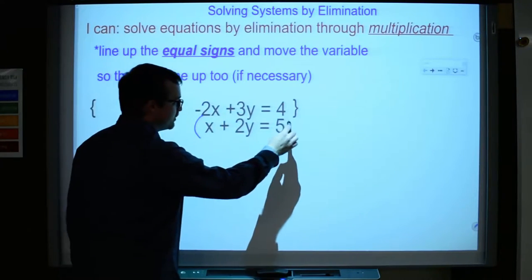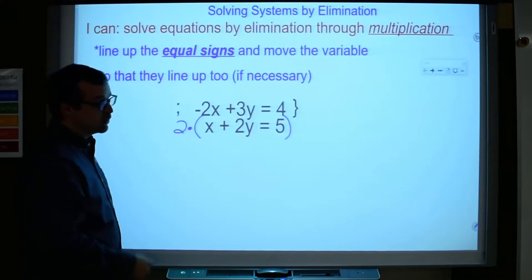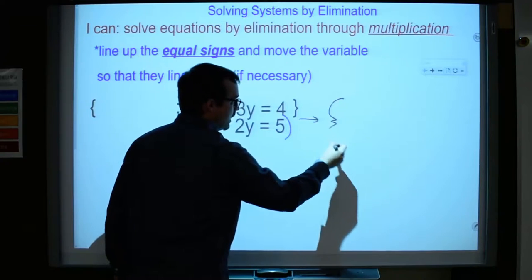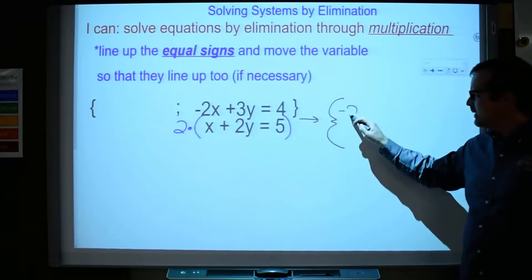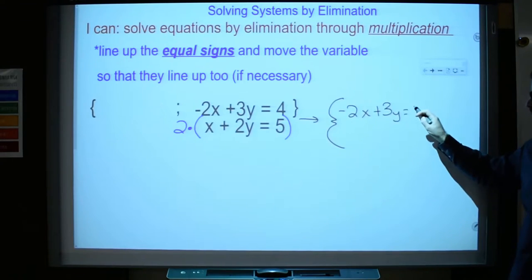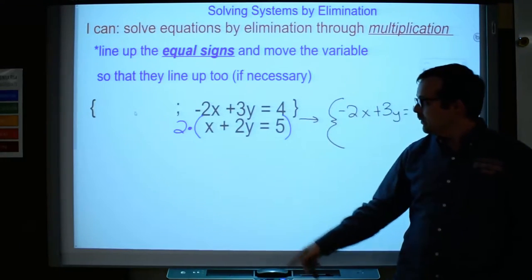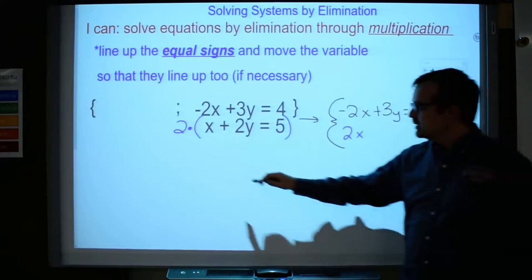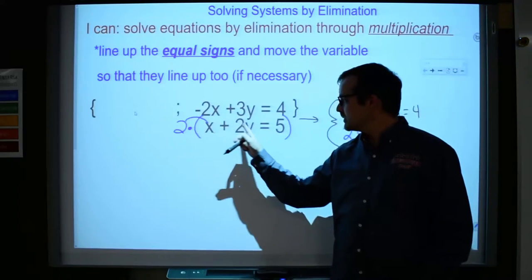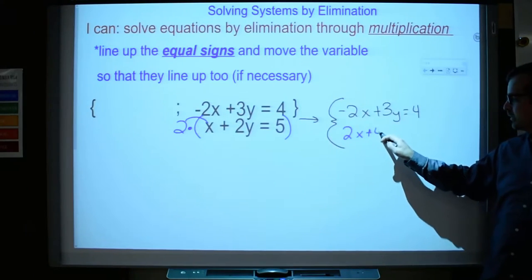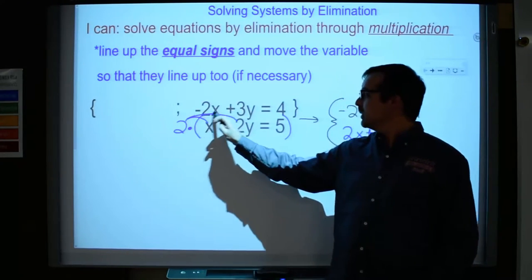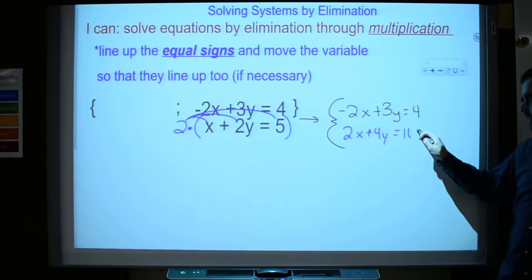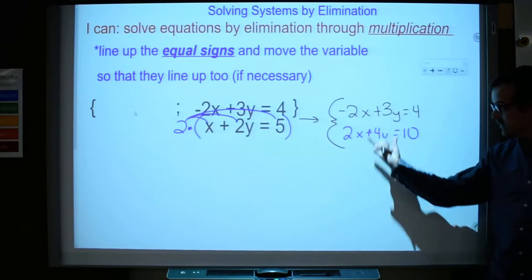Let's multiply this bottom equation by 2 and see what happens. I'm going to rewrite my system because I am changing it. I'm not doing anything to the top equation, so I'm just going to rewrite that really quick for reference. Now we're going to multiply everything, and I mean everything. 2 times x, which is 2x. I'm going to do 2 times the 2y, which is a positive 4y, and I'm also going to multiply by this 5. 2 times 5 is 10. So I've multiplied everything by 2, and now I have a new system to work with.